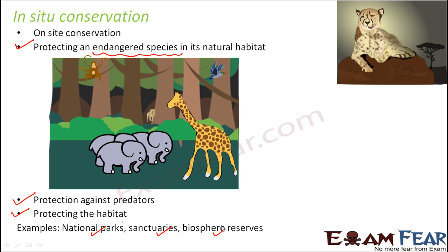In India itself, we have more than 600 protected areas, either in the form of national parks or animal sanctuaries. In all these areas, the animals are not captivated — rather, that particular area is protected so that people cannot hunt animals there, cannot exploit the habitat, and cannot cause any sort of harm to the animals. This type of conservation is known as in situ conservation.